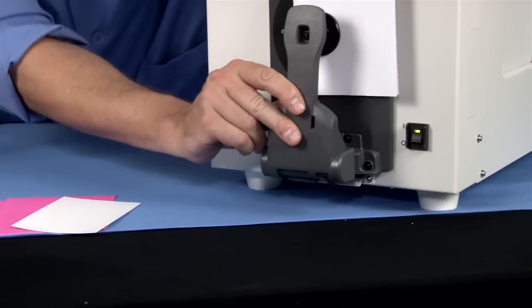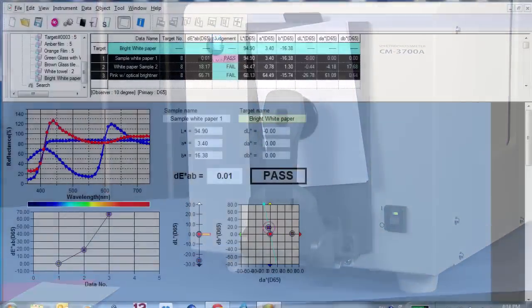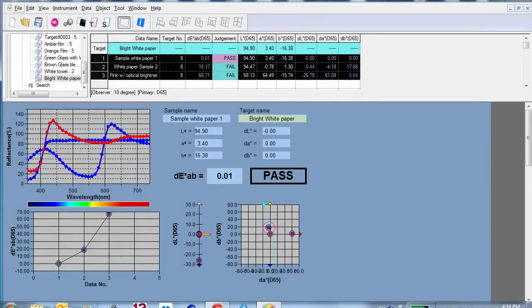The variable UV cut filter enables users to measure samples containing optical brighteners, such as paper, pulp and chemicals.